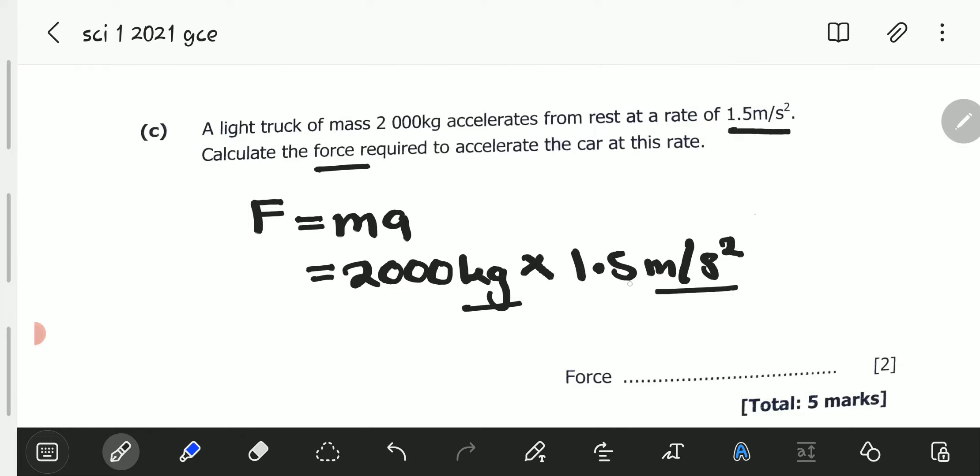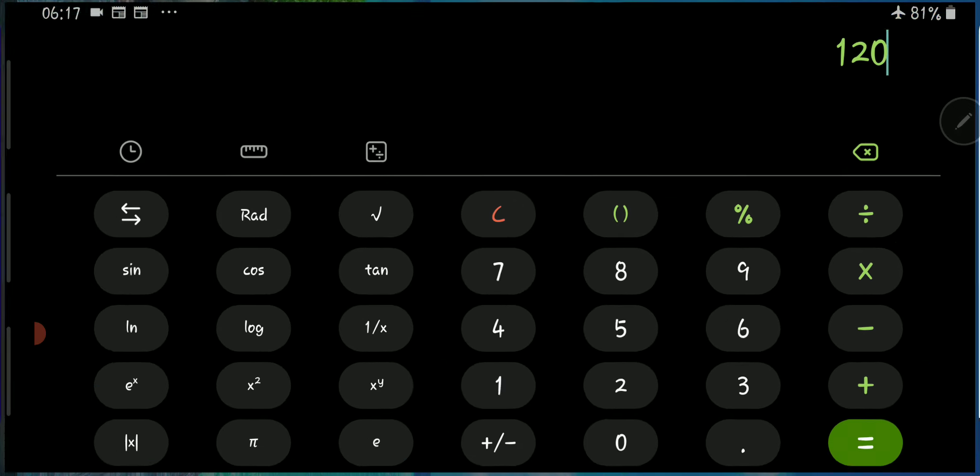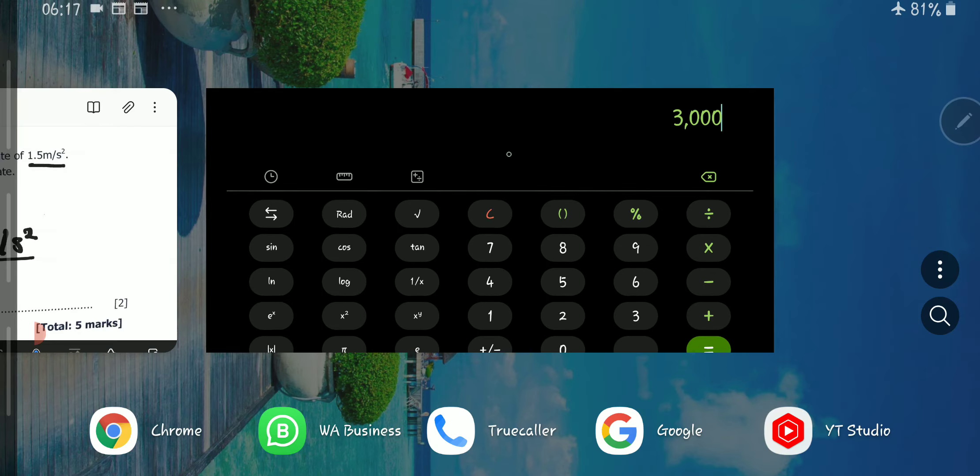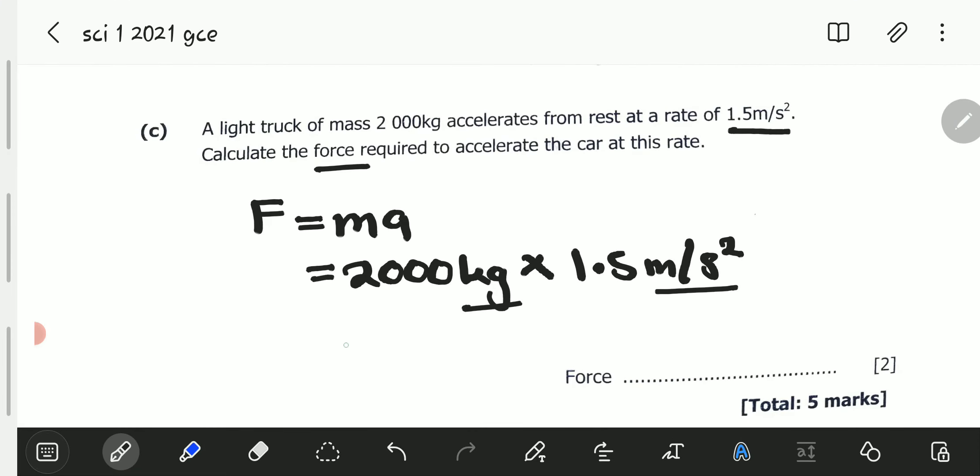So, 2,000 kilograms times 1.5 meters per second squared will be, it's 2,000 multiplied by 1.5. So, this gives us 3,000. So, we have 3,000. So, this is equal to 3,000. 3,000 what? It's a force. Newtons. So, we're going to now write force is 3,000 Newtons. So, this is our answer.